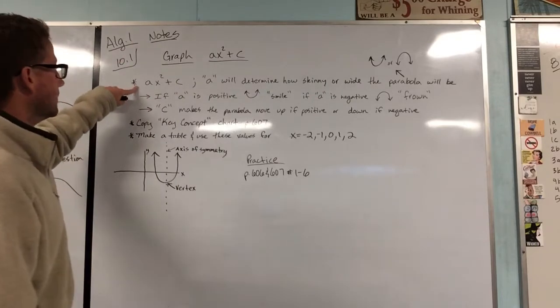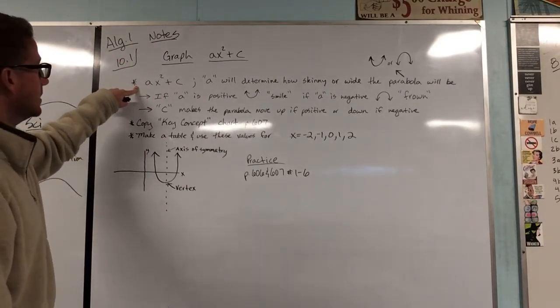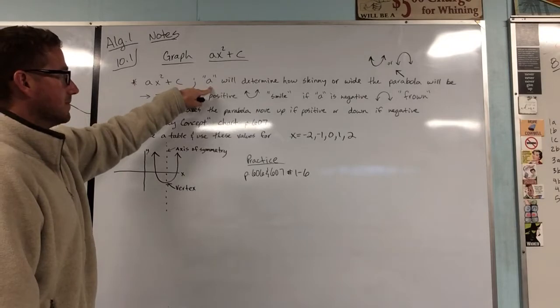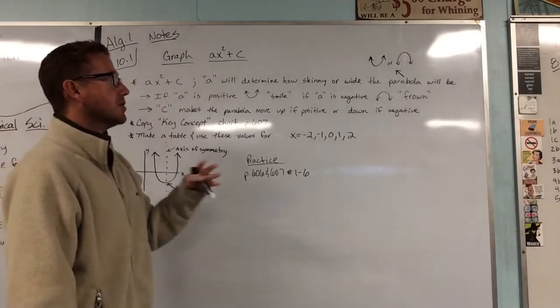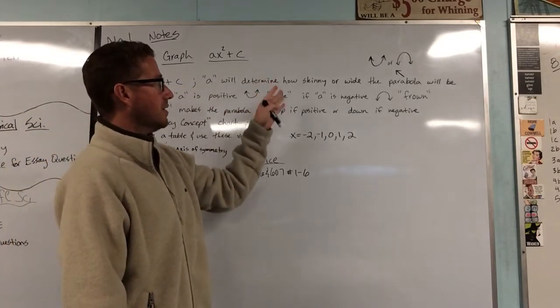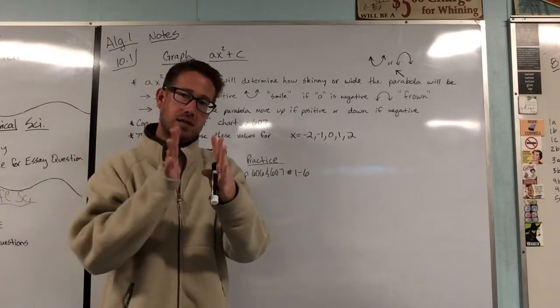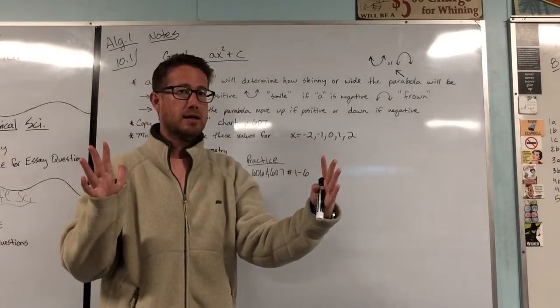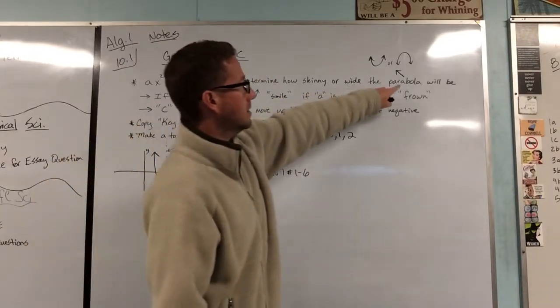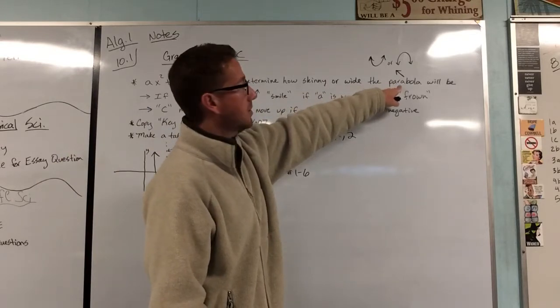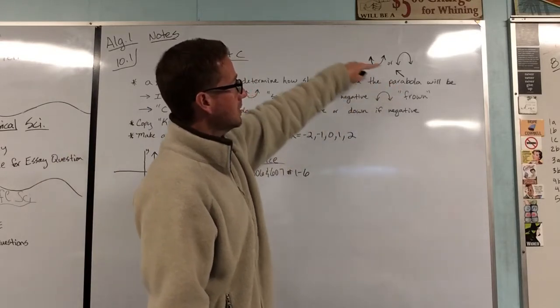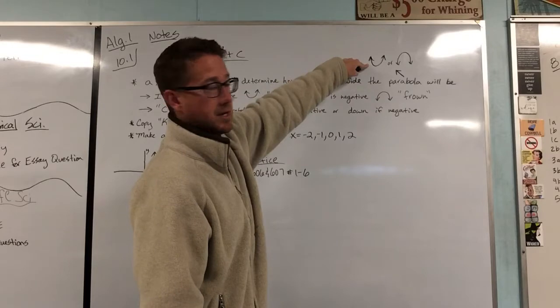All right, so this equation again, ax squared plus c, the a is going to be determining in the graph either how skinny or how wide the parabola is, and just in case you don't know, a parabola makes these shapes up here.